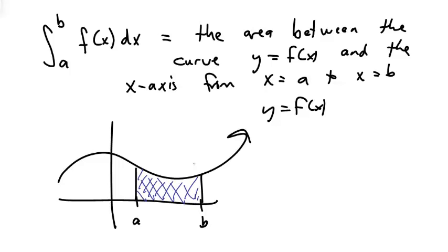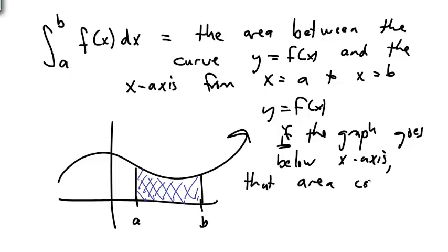One caveat, and that is, if the graph goes below the x-axis, that area counts as negative. This function that I've drawn seems to be entirely above the x-axis. But if it went below the x-axis, and you happen to be concerned about a point over here, you're going to have a negative answer. You've got to figure out what that area is, and it will count negatively.